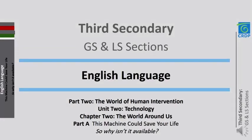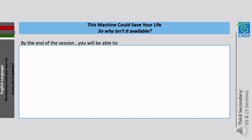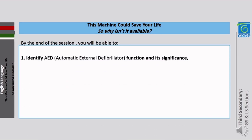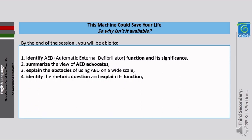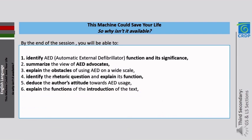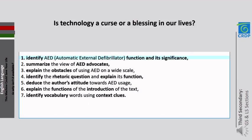Hello dear general and life sciences students. Today's lesson is related to the theme of technology, and the topic is about this machine that could save your life. By the end of the session, you will be able to achieve seven learning objectives: one, identify AED automatic external defibrillator function and its significance; two, summarize the view of AED advocates; three, explain the obstacles of using AED on a wide scale; four, identify the rhetorical question and explain its function; five, discuss the author's attitude towards AED usage; six, explain the functions of the introduction of the text; seven, identify vocabulary words using context clues.